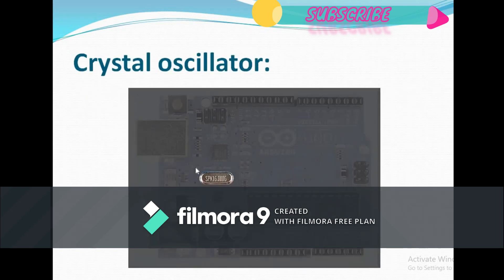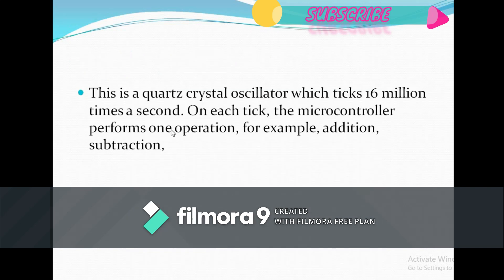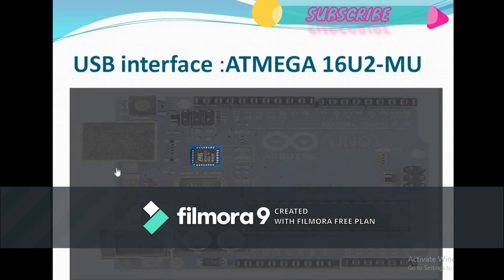The crystal oscillator is the next component — shown here. This is a quartz crystal oscillator which ticks 16 million times a second, meaning it runs at 16 MHz. On each tick, the microcontroller performs one operation, for example addition or subtraction.